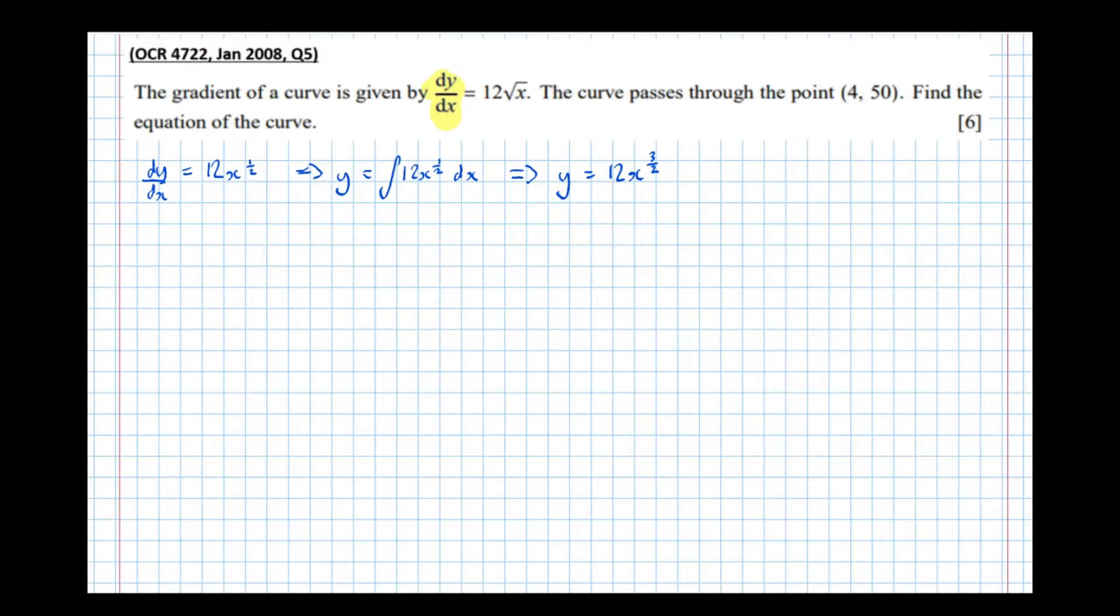However, we're going to take a shortcut. Rather than writing over 3 over 2, which gets messy, we know that dividing by a fraction is the same as multiplying by its reciprocal. So we're going to multiply by 2 thirds. And in an integration, we always have a constant at the end, plus c.